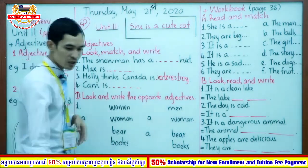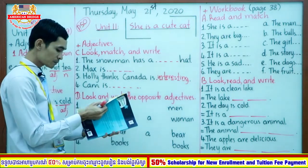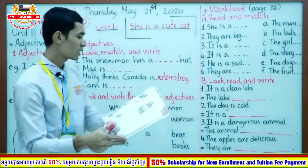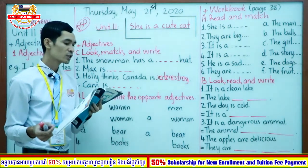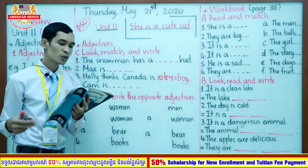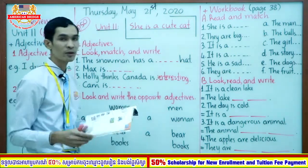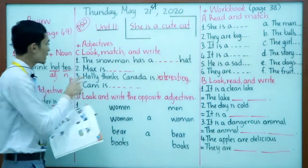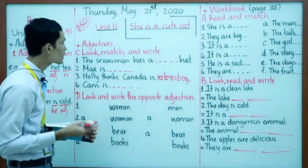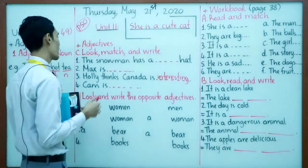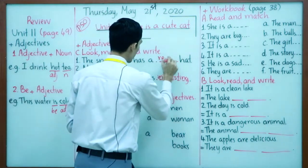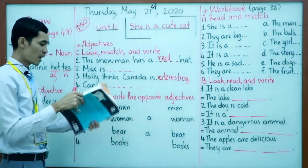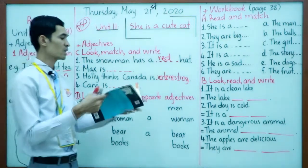Open your textbook on page 50. On page 50, look, match and write the words in the box. How many words in the box? We have: red, tired, cold, and interesting. Number one is given as an example — the snowman has a red head. So match two letters: red head, letter A.